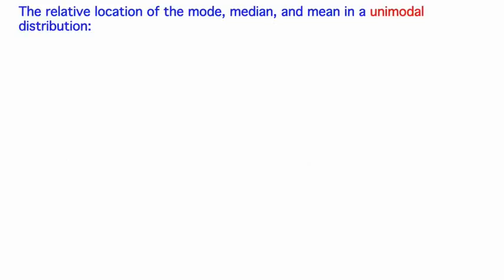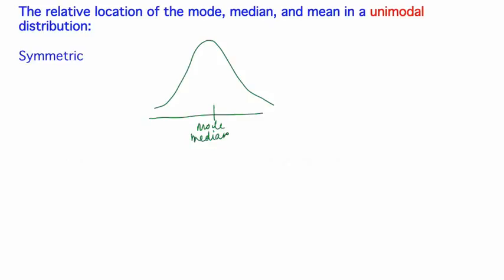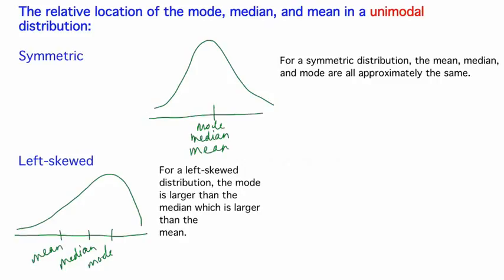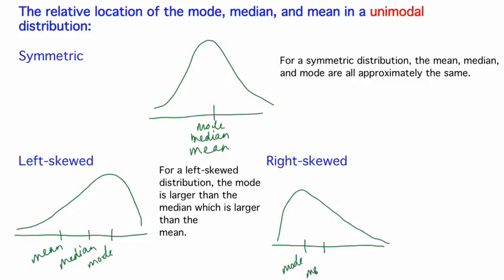The three examples we just looked at all had unimodal distributions, because unimodal distributions are by far the most common. We'll now summarize what we've seen about the relative location of the mode, median, and mean in unimodal distributions. If the distribution is symmetric, the mean, median, and mode are all approximately the same. For a left skewed unimodal distribution, the mode is typically larger than the median, which in turn is larger than the mean. And for a right skewed distribution, the mode is typically less than the median, which in turn is less than the mean.